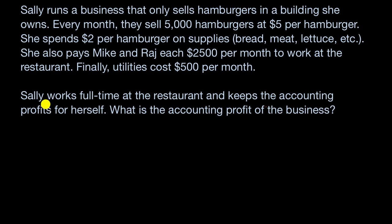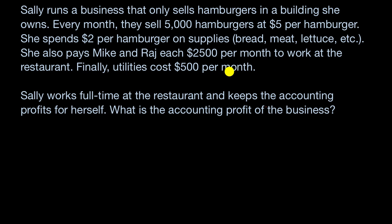Let's continue thinking about how rational agents make decisions. Sally runs a business that only sells hamburgers in a building she owns. Every month, they sell 5,000 hamburgers at $5 per hamburger. She spends $2 per hamburger on supplies — bread, meat, lettuce, et cetera. She also pays Mike and Raj each $2,500 per month to work at the restaurant. The utilities cost $500 per month. Sally works full-time and keeps the accounting profits for herself. What is the accounting profit of the business?